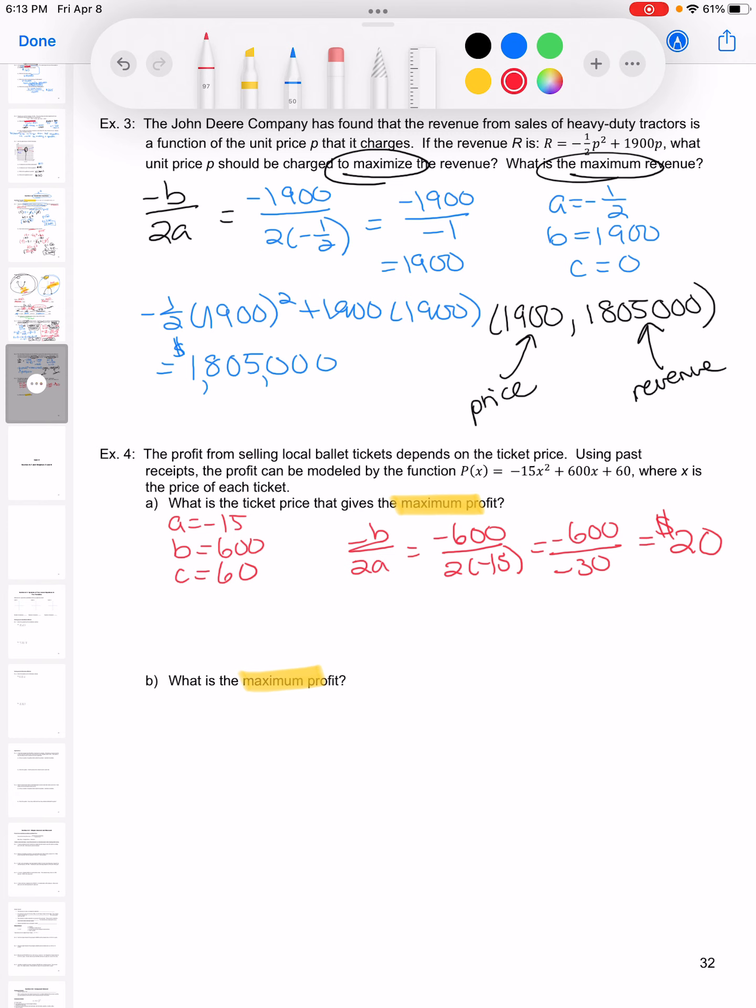Now for part B, I'm going to plug 20 into my equation that I had from up above. I'll plug that in. I'm going to type that in my calculator and I get 6060. So that is my maximum profit.